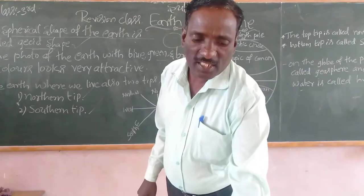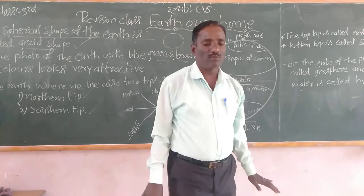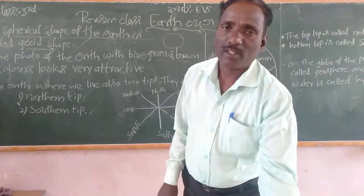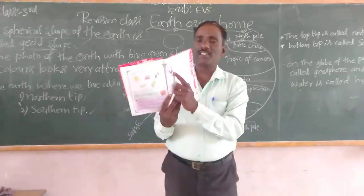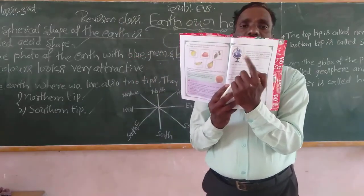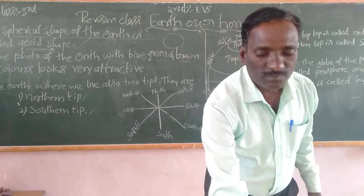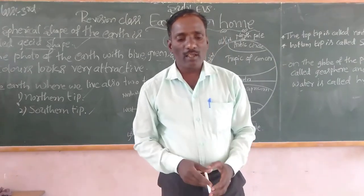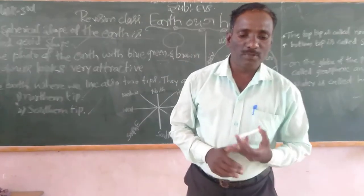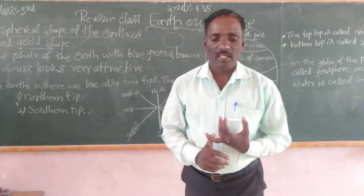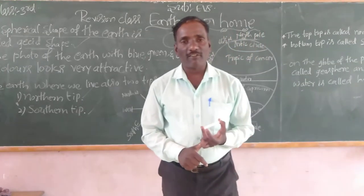Observe the pictures. It is a small model of the earth. The small model of the earth is called a Globe.